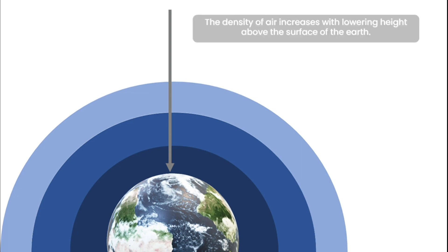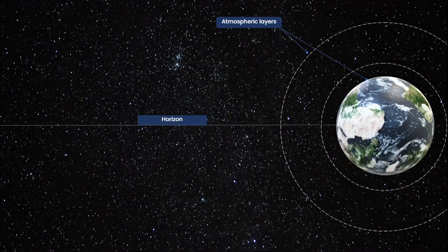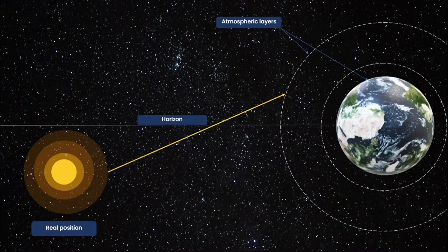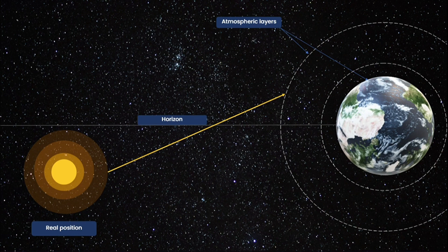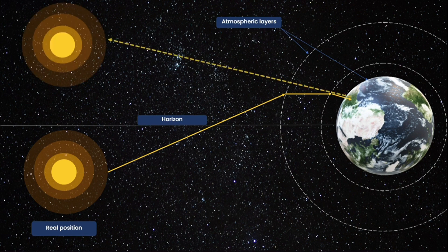Starlight coming towards us travels from rarer medium to denser medium. Because of this, the light ray constantly bends towards the normal. This makes the star appear to be higher in the sky as compared to its actual position.